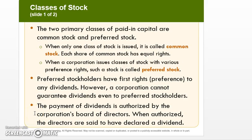A corporation can issue several classes of stock: common stock and preferred stock. The major difference between the two is that common stock shareholders have a right to vote, while preferred stockholders do not. Preferred stockholders have a preference as to dividends — in other words, they'll receive dividends first if a dividend is declared, before the common shareholders.